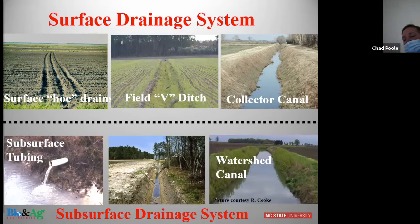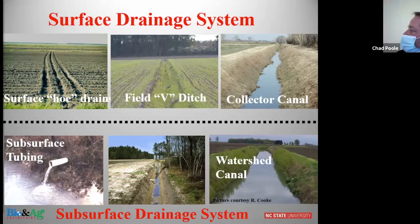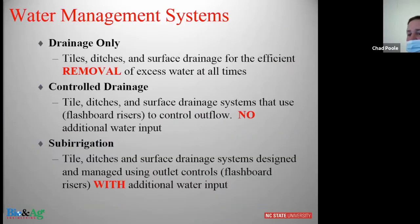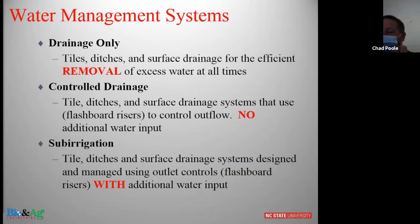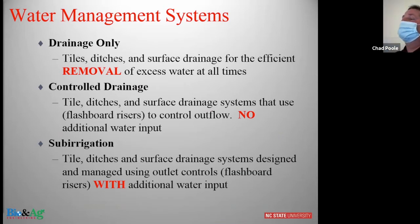Subsurface drainage systems include tile drainage. You can have combinations of ditches and tiles, and collector canals or watershed canals also provide subsurface drainage adjacent to the fields.